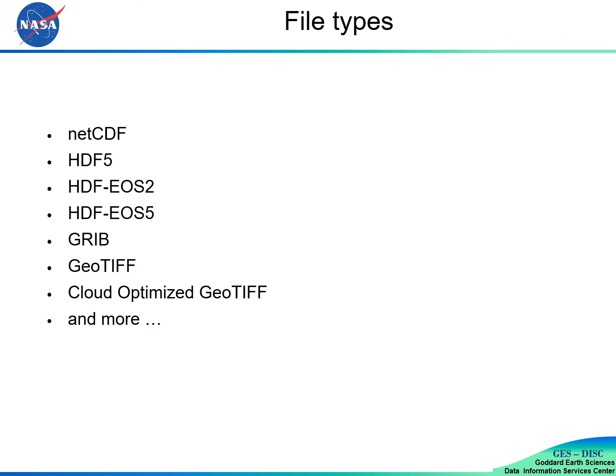Data formats are varied, including NetCDF, HDF5, HDF-EOS2, EOS5, GRIB, GeoTIF, and Cloud-Optimized GeoTIF. The last GeoTIF outputs are recently added to the system.